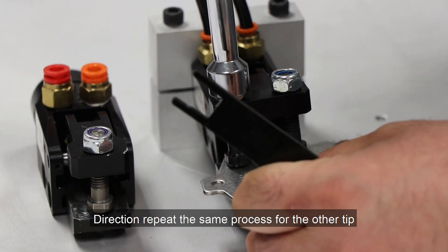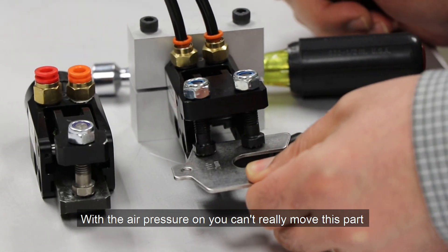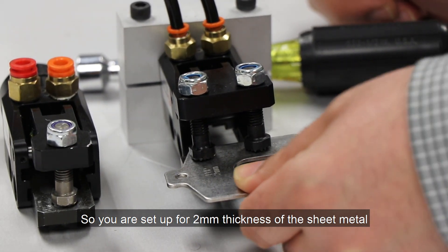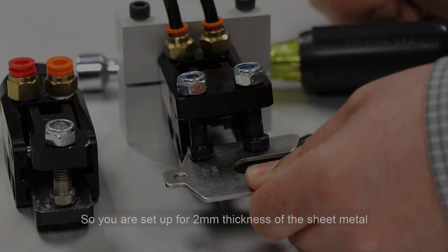Repeat the same process for the other tip. With the air pressure on, you can't really move this part. So you are set up for 2mm thickness of the sheet metal.